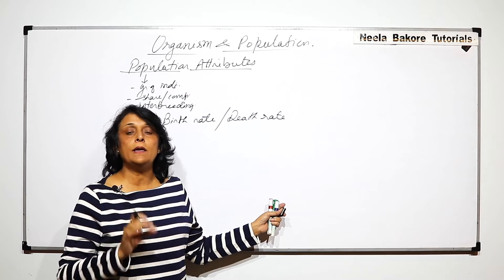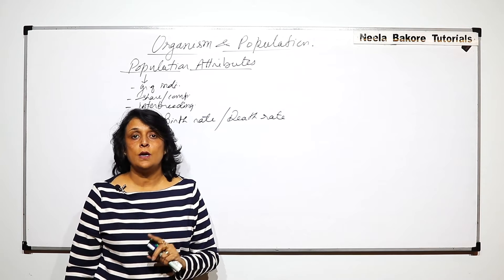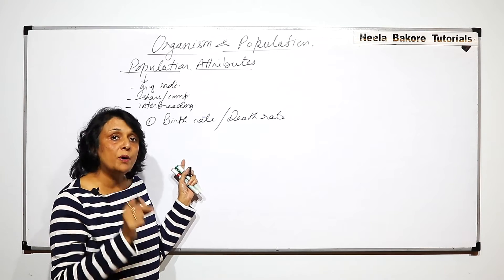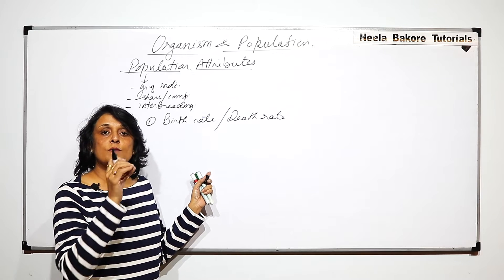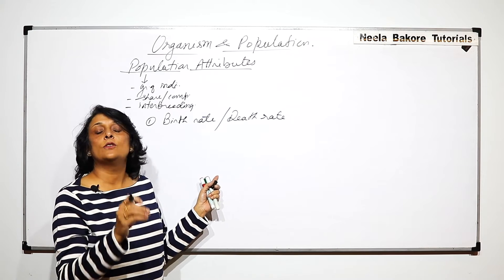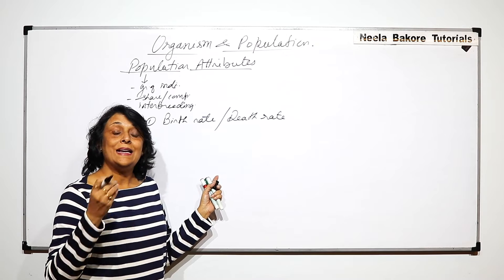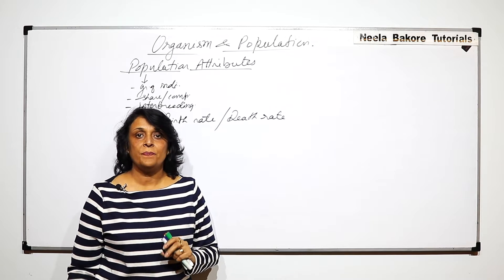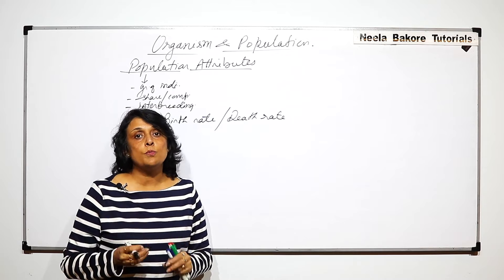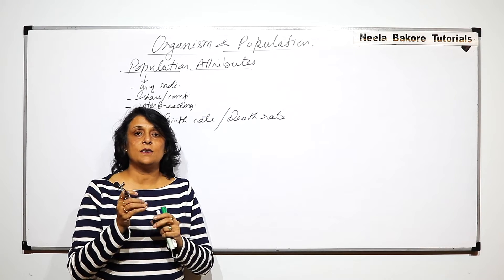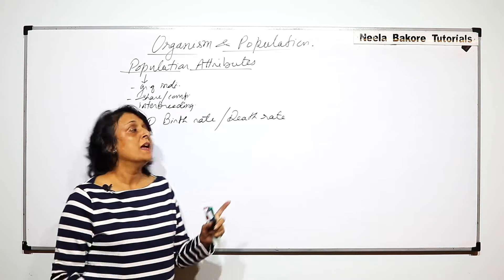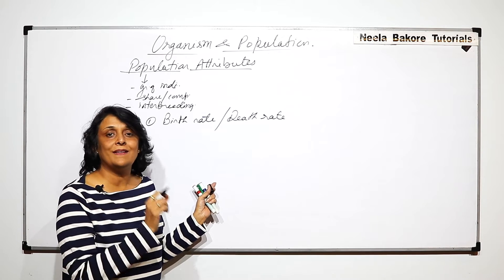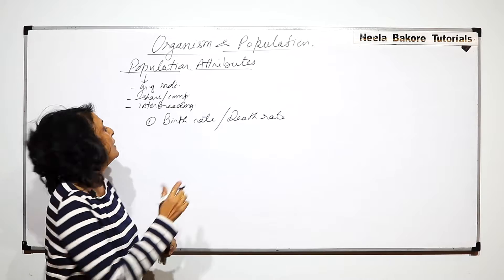If you are talking about an organism, we just use the words birth and death — birth of an organism, death of an organism. But birth rate and death rate refer to a population. If an individual is born, we say the organism is born. When talking about the population, we mention the rate.